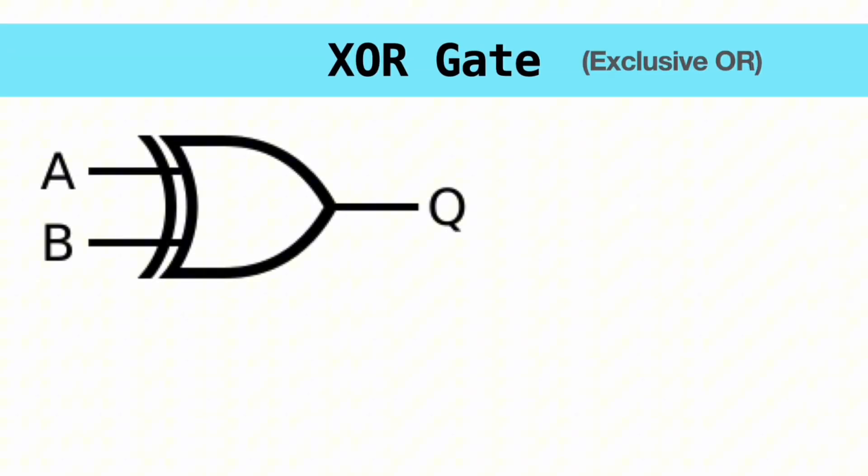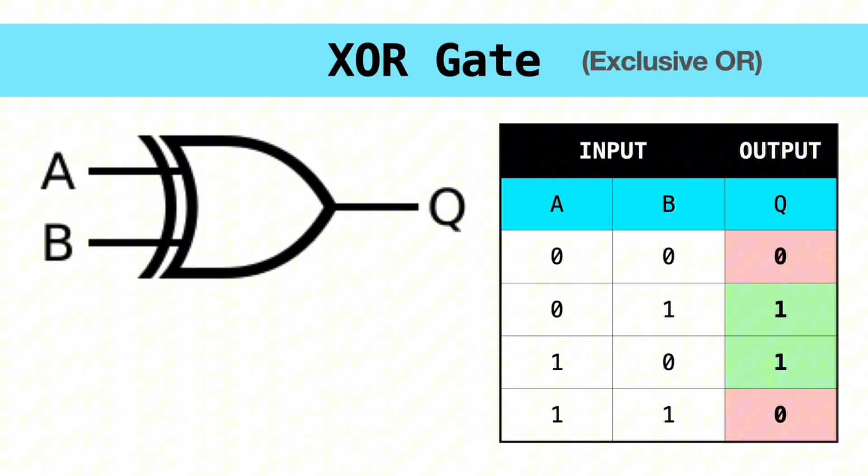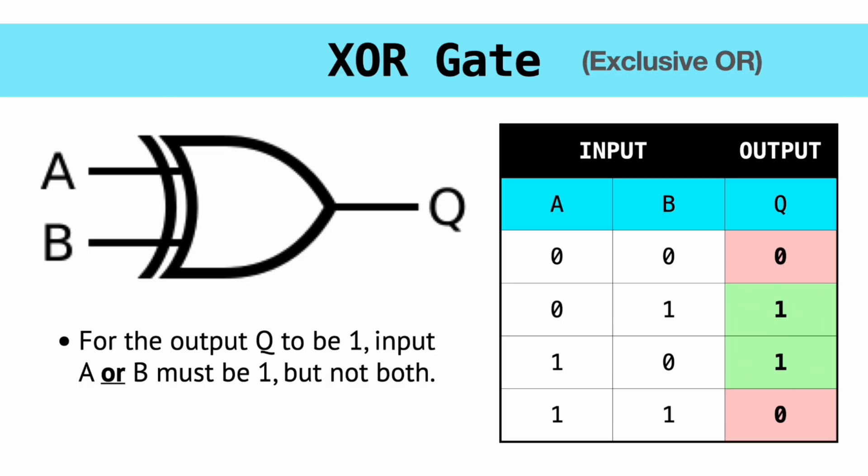And finally, we have the EXOR gate, also called the EXCLUSIVE OR. The symbol for the EXOR gate looks like an OR gate, but it has an additional curved line on the input side here. Unlike an OR gate, which produces a 1 if any input is a 1, the EXOR gate requires that only 1 input is 1 for the output to be 1. The inputs cannot both be 1, and they also cannot both be 0 if you want the output to be 1.